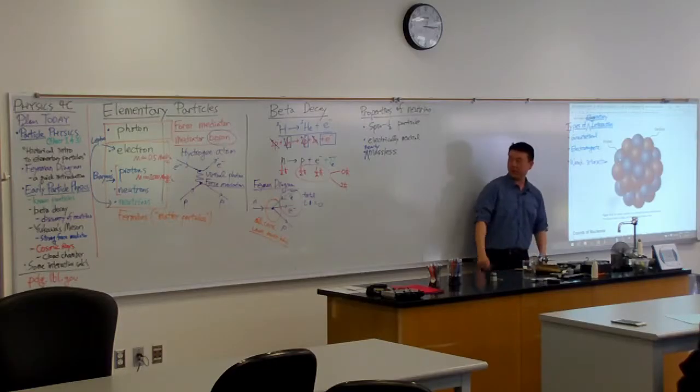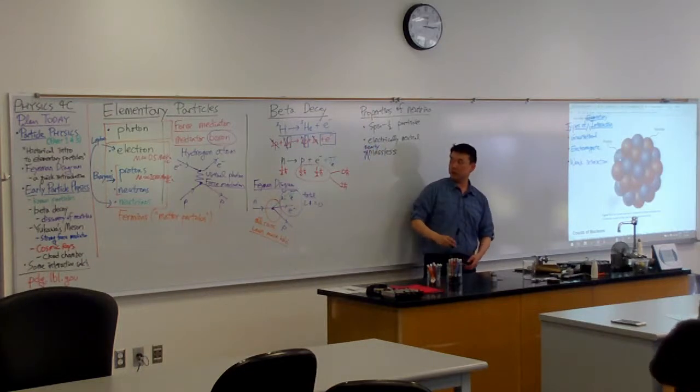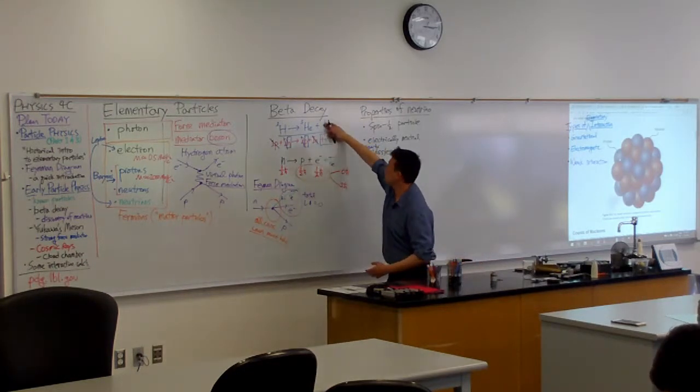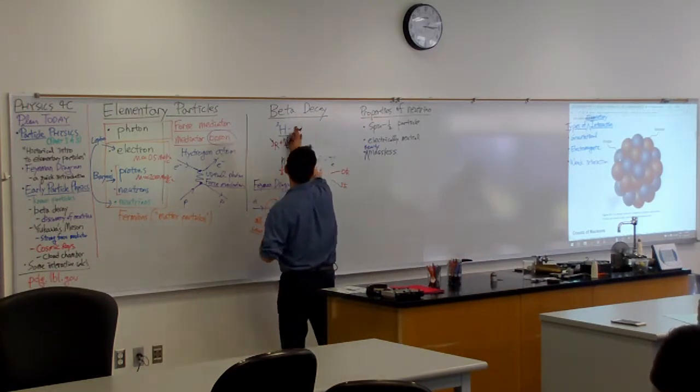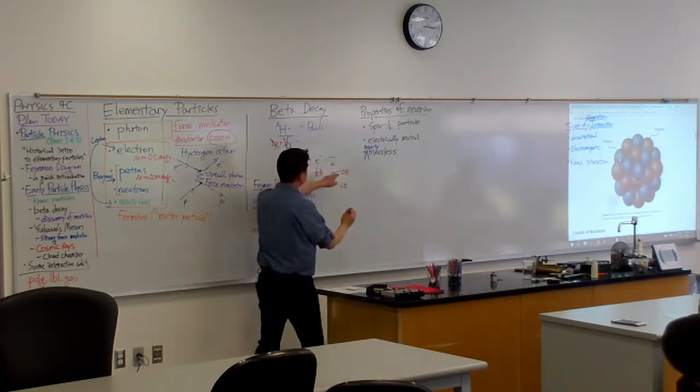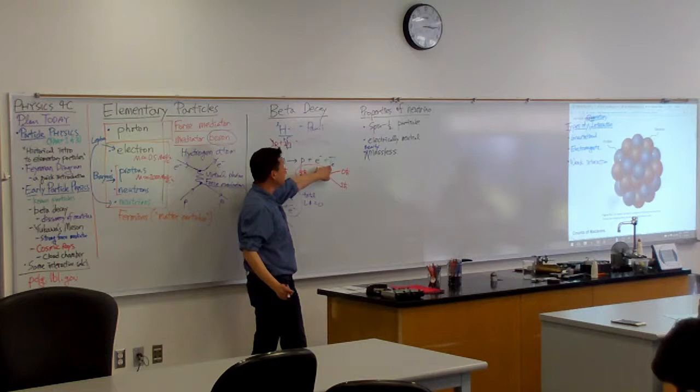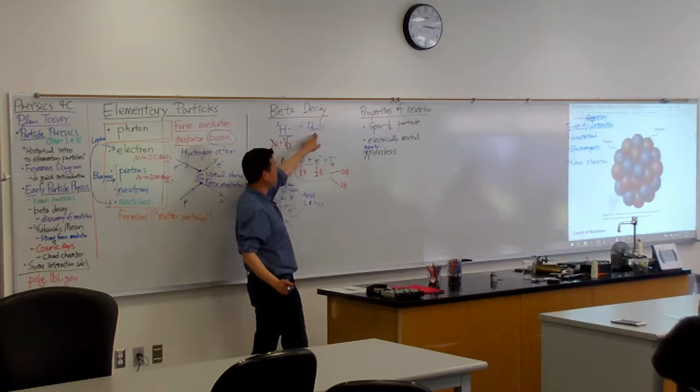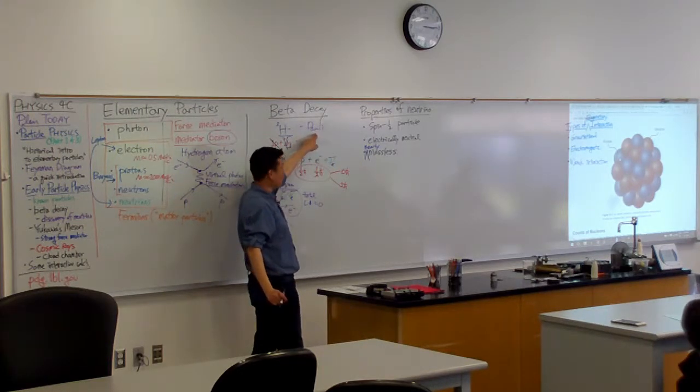The theory of beta decay - if you want to look up the names, the people who came up with this theory were Pauli, as I mentioned. He's the guy who suggested the neutrino. But actually the name neutrino wasn't from Pauli. He wanted to call it neutron before we had a neutron. So the name neutrino comes from a guy named Enrico Fermi.